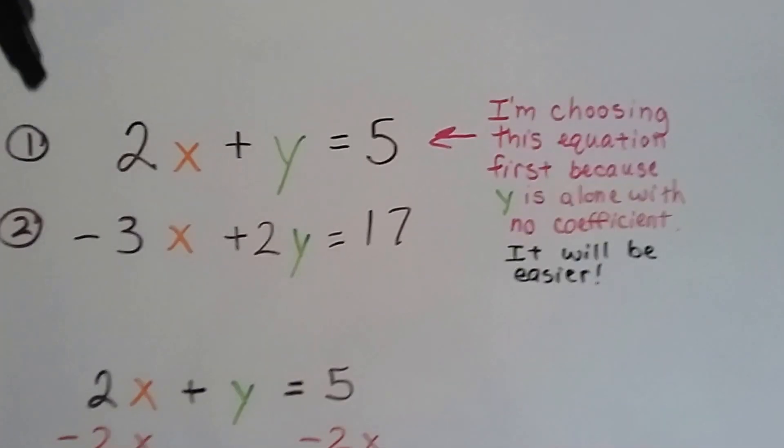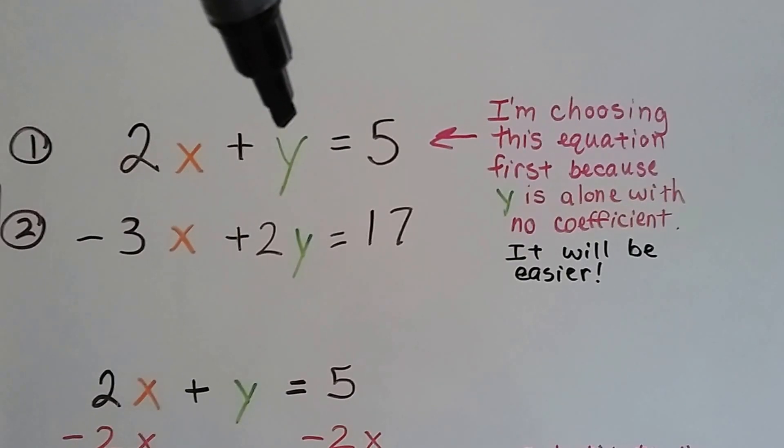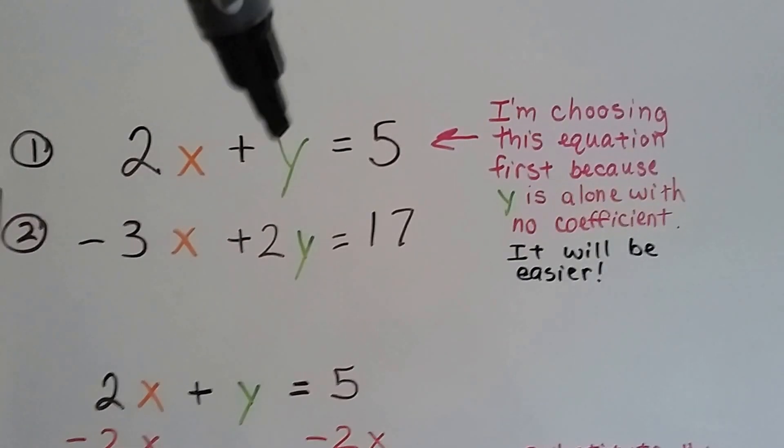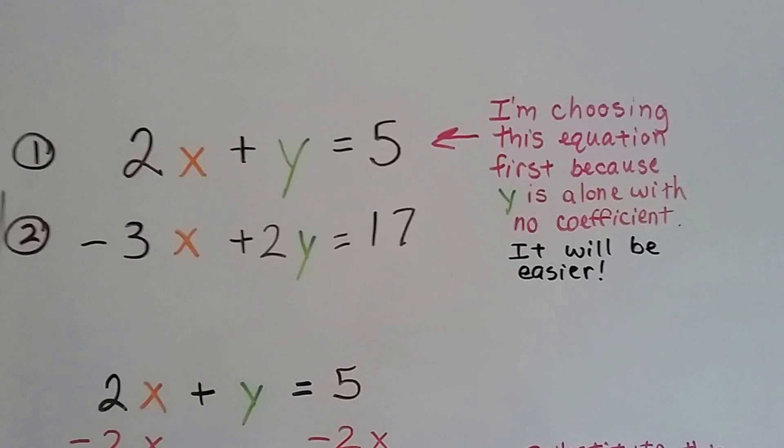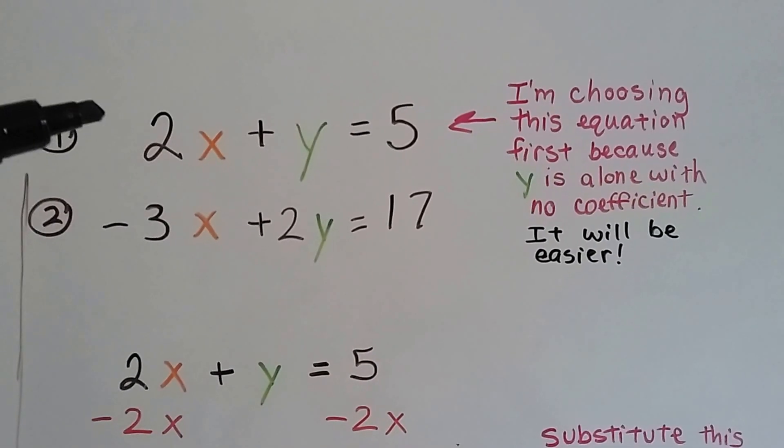So I'm going to start with this first equation because I see the y doesn't have a coefficient, it's by itself. It's going to be easier to get alone. I'm not going to have to do any division. I probably won't run into any fractions. So I'm going with number 1.